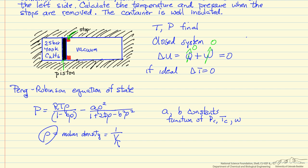A and B, where these constants are a function of the critical pressure, which is 4.88 megapascals for ethane, critical temperature 305.4 kelvin, and the eccentric factor 0.099.